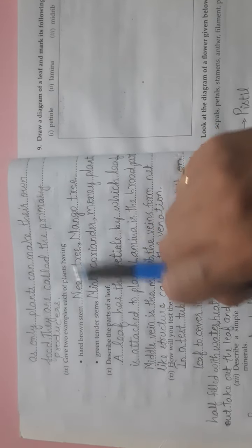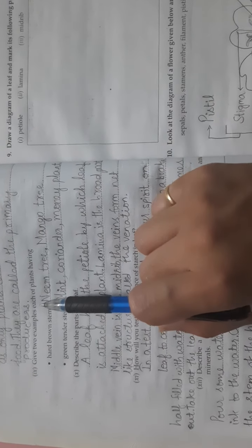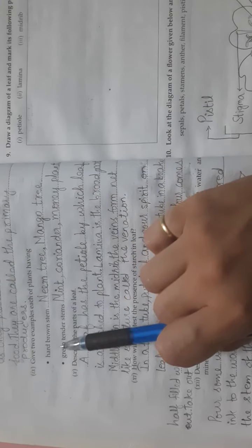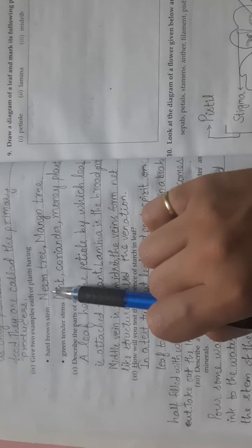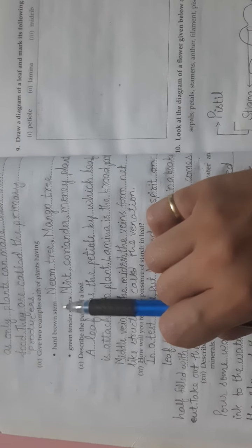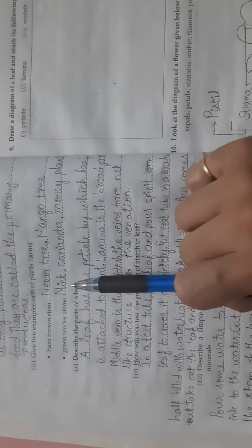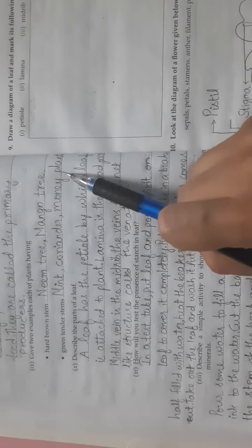Ninth, give two examples each of plants having hard brown stem, example name tree, mango tree. These two have hard brown stem. And the next one is green tender stems: mint, coriander and money plant. These have soft green tender stems.